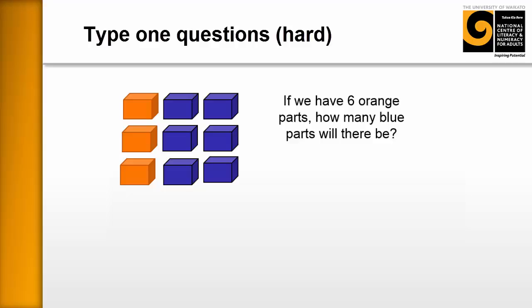Now we want to ask them an extending question. So we ask them the next question: If we have six orange parts, how many blue parts will there be? So now we're just increasing their numbers a little bit. They have to look at what they've got on their desk there and they have to think, if there were three of them, we know that there are six blue parts.